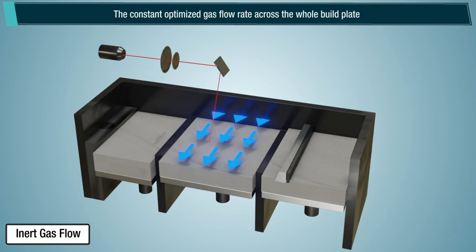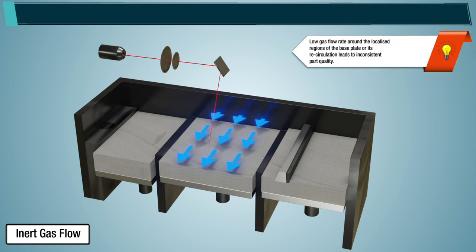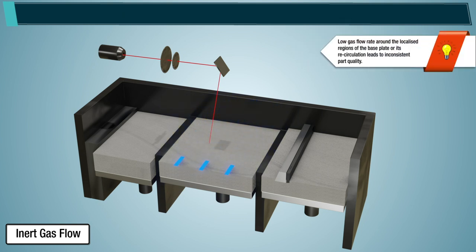The constant optimized gas flow rate across the whole build plate is required to generate consistent melting conditions in all regions. Note: Low gas flow rate around the localized regions of the base plate or its recirculation leads to inconsistent part quality.